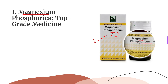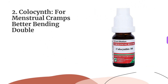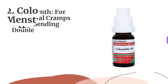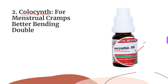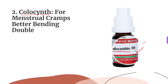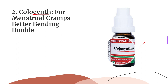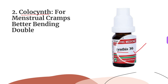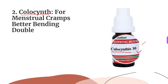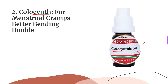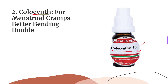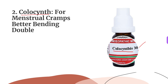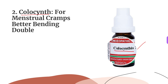The second medicine is Colocynthis, for menstrual cramps that are relieved by bending double. This medicine is highly recommended when cramping pain is relieved by bending forward; pain is worse from eating or drinking anything; there may be a tendency to heavy and frequent periods. It should be given in cases where bending forward reduces the intensity of pain during periods. The most frequently used potency is 30C, taken two or three times a day during periods as per intensity of pain.